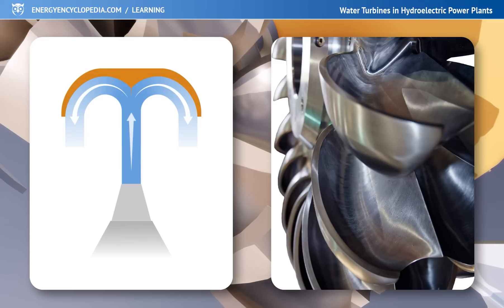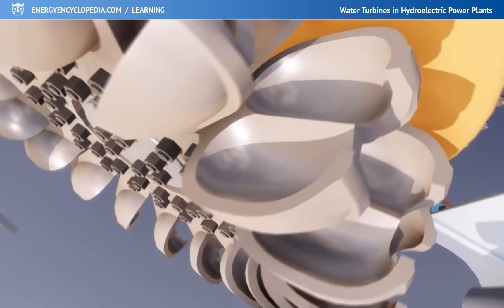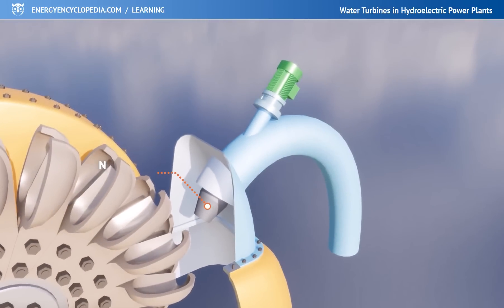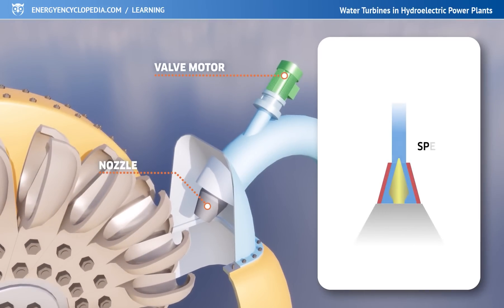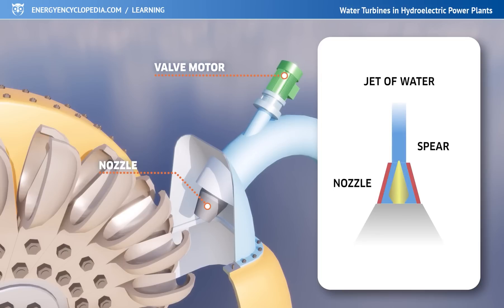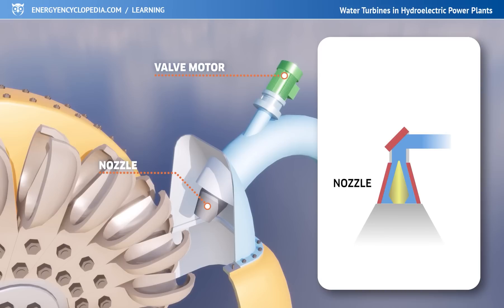Because water is nearly incompressible, as it reverses direction, it gives up almost all of its energy to the buckets and exits the turbine with minimal residual velocity. The output of the Pelton turbine is regulated by moving a conical regulation spear in the nozzle, which functions as a valve that reduces or increases the flow of water in the turbine. If the turbine needs to be stopped immediately, the water jet is simply diverted from the runner buckets using various deflectors.